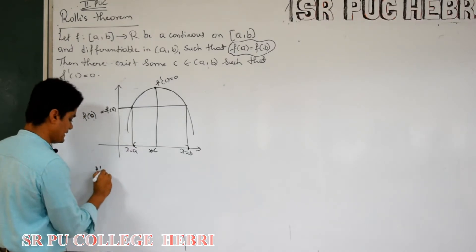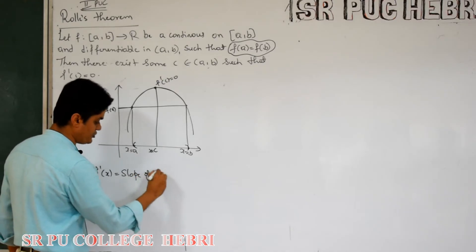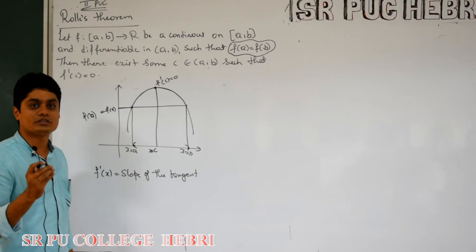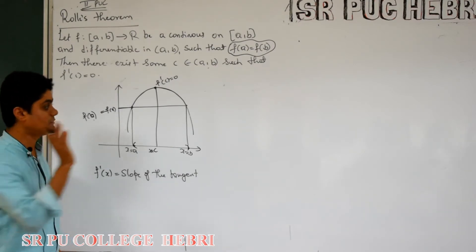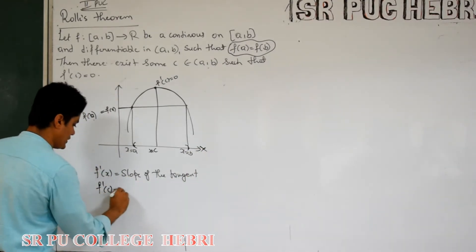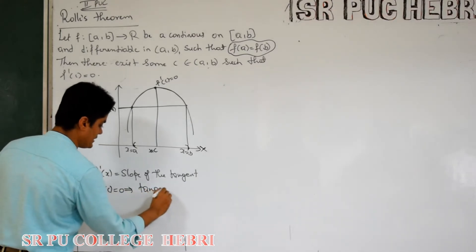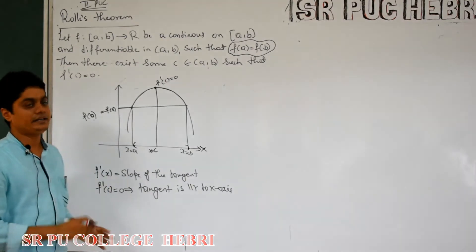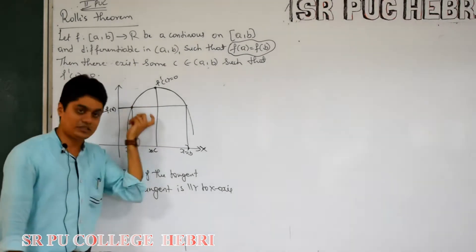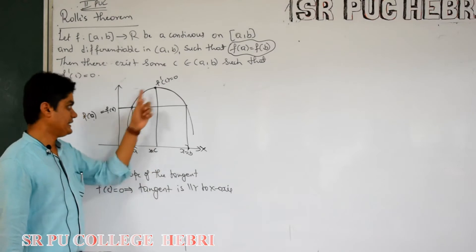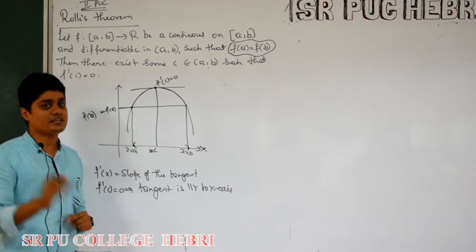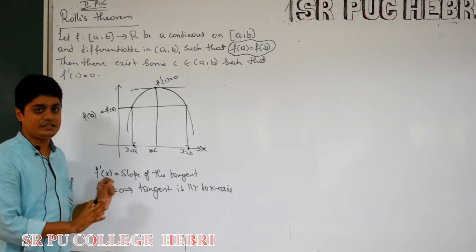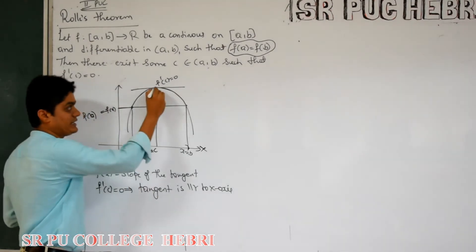What does f'(x) represent for a curve? It represents the slope of the tangent. If the slope of any line is equal to 0, then that line is parallel to the x-axis. So f'(c) = 0 implies the tangent is parallel to the x-axis. This theorem says that when all three conditions are satisfied, there exists a tangent to this curve in the interval (a, b) that is parallel to the x-axis.